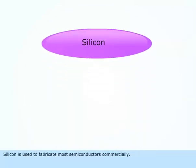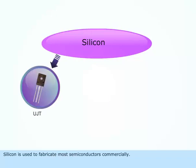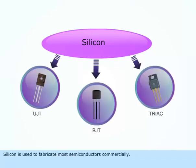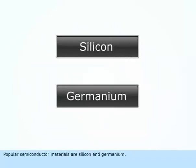Silicon is used to fabricate most semiconductors commercially. Popular semiconductor materials are silicon and germanium.